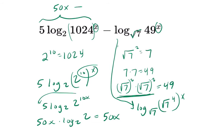And this, if I bring this exponent in the front again, I get x times the log base square root of 7 of the square root of 7 to the fourth. And this is just 4 because the square root of 7 to the fourth is the square root of 7 to the fourth. So altogether, that's just 4x.